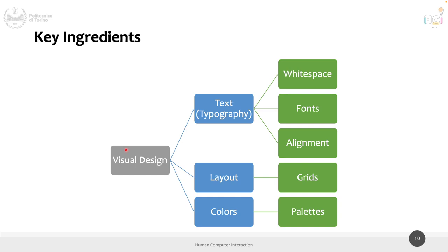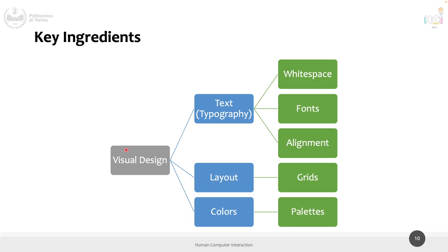When you operate with text, these three things to consider — fonts, white space, and alignment — make a huge difference in the information people will get and understand, and how many errors they will make if you desire them to proceed with something in your application or website.